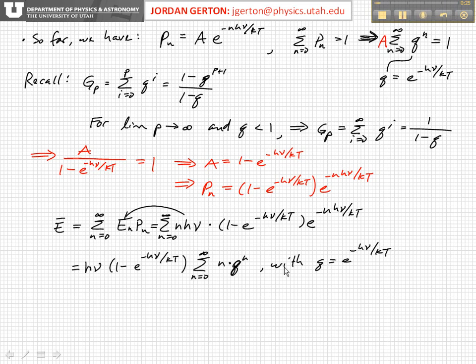Now, we notice that we have an h nu and a 1 minus e to the minus h nu over kt, and these things do not depend on n. So if we factor them out and then rewrite, as we did before, e to the minus h nu over kt as q, then this expression for the average energy for a mode is given by this pre-factor times the sum of n q to the n.